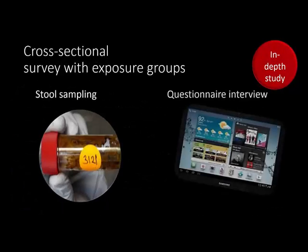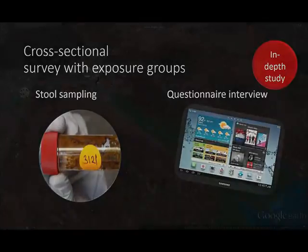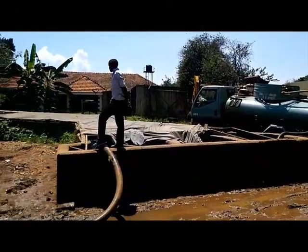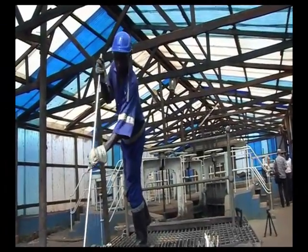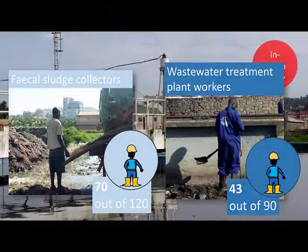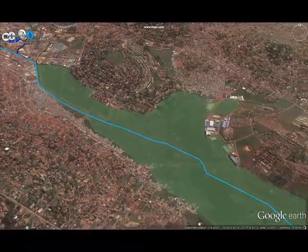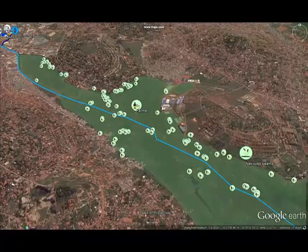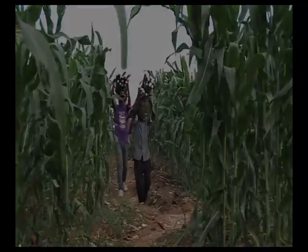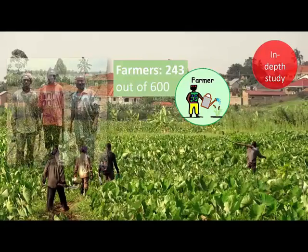For the cross-sectional study, the team enrolled 915 participants, all over the age of 18. Out of some 120 fecal sludge collectors, 70 were enrolled in this study. 43 wastewater treatment plant workers were enrolled out of the 90 who operate the plant or sewage system. Management and office workers were excluded as they likely had a different level of exposure and socioeconomic standard. Out of 600 farmers, 243 were included in the study.